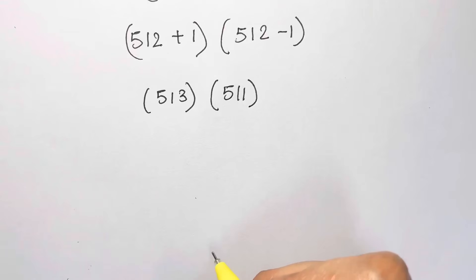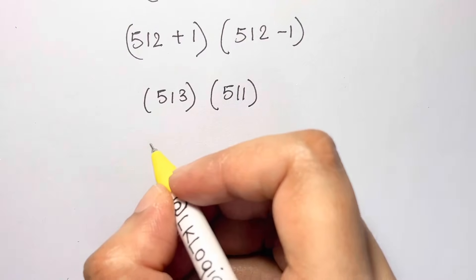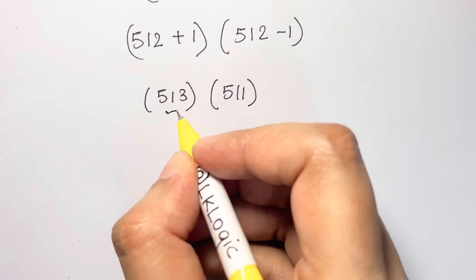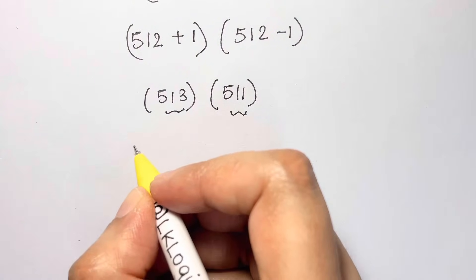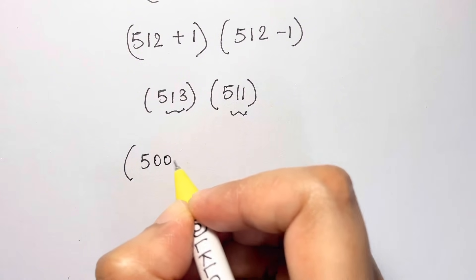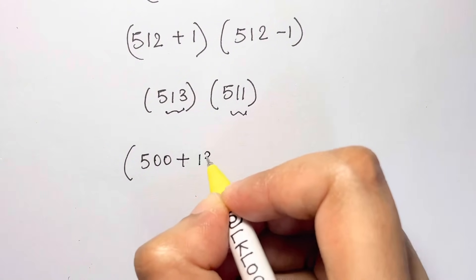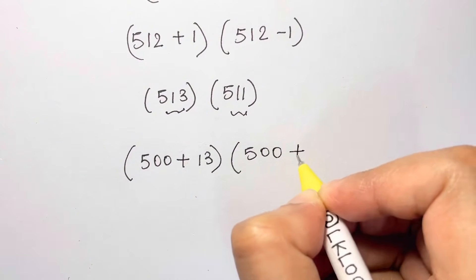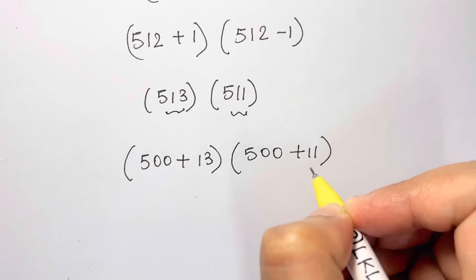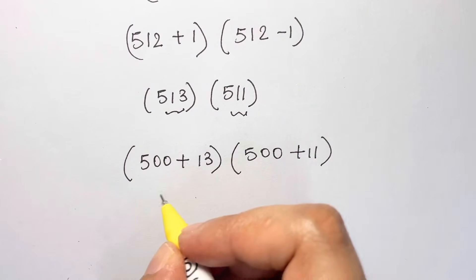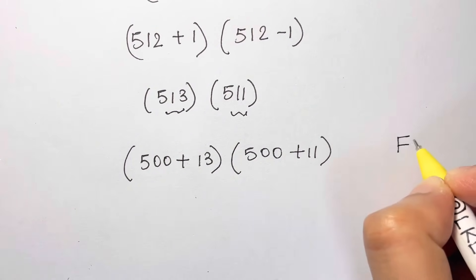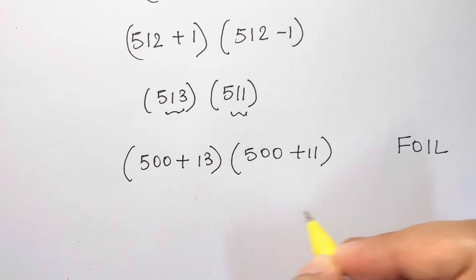So now we are just going to split this both into 500 plus 13 times 500 plus 11. And now we are going to use the FOIL method and multiply the two brackets.